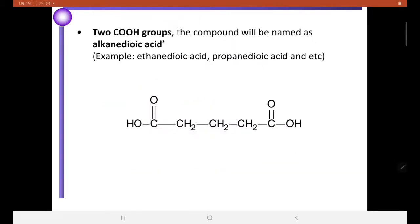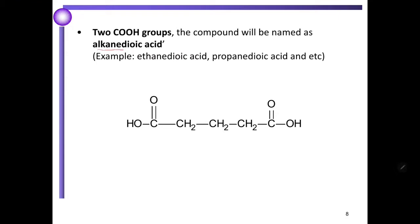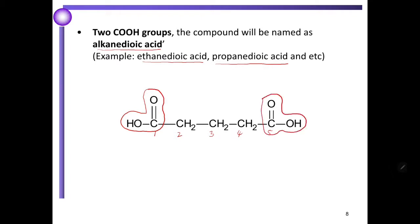If we have two COOH groups, the compound will be named as an alkanedioic acid. Example: ethanedioic acid, propenedioic acid. We have a structure with one, two, three, four, five carbons and two carboxyl groups. The name for this structure will become pentanedioic acid. Pentanedioic: when we have five carbons. Dioic acid means we have two COOH groups.